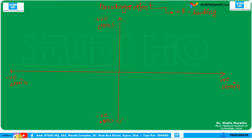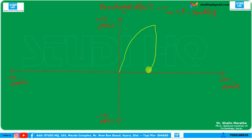Suppose we first apply tensile stress on the material, and because of that it will have tensile strain. After applying this tensile stress and obtaining tensile strain, we remove the tensile stress. But because of the plastic nature of the material, some amount of strain will remain inside the material — the material won't be able to return to its original shape and size. So at this point the value of stress is zero, but there is still strain in the material.